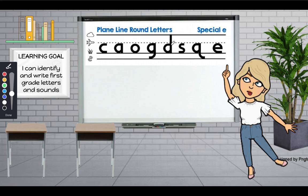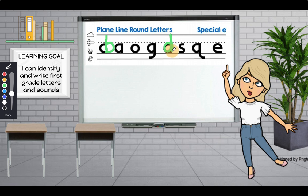I'll show you. The letter D — we start on the plain line, go back down and around the grass line just like the letter A, all the way back up to the skyline, and trace all the way back down to the grass line. D, dog, d. Now this is different from the letter B, where we start on the skyline and go down, back up, and around. For the letter D, we start here and go around and then up. Do you see how that's different?